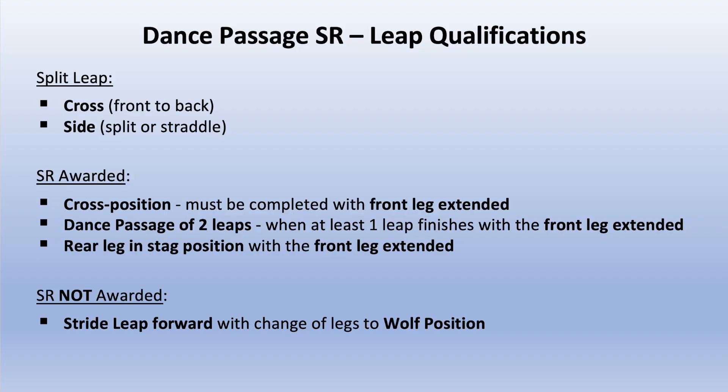A split leap may be cross (front to back) or side (split or straddle). Special requirement credit would be awarded in the cross position if the front leg is extended. For dance passages of 2 leaps, credit is awarded when at least 1 leap finishes with the front leg extended, and with the rear leg in stag position with the front leg extended. Special requirement credit would not be awarded for a stride leap forward with a change of legs to the wolf position.